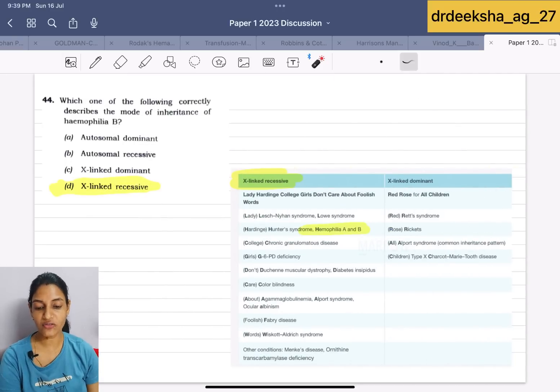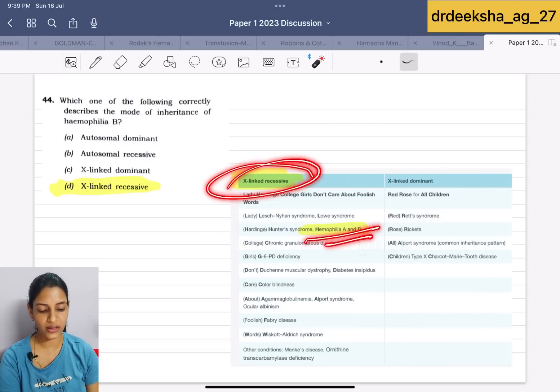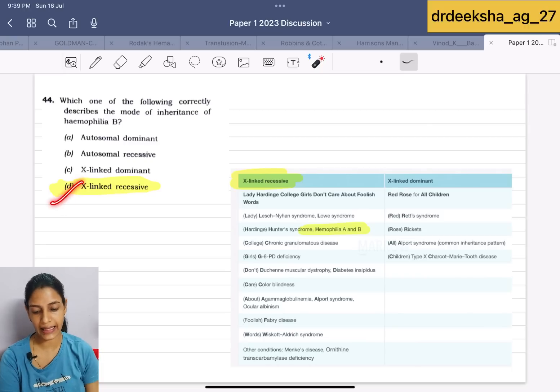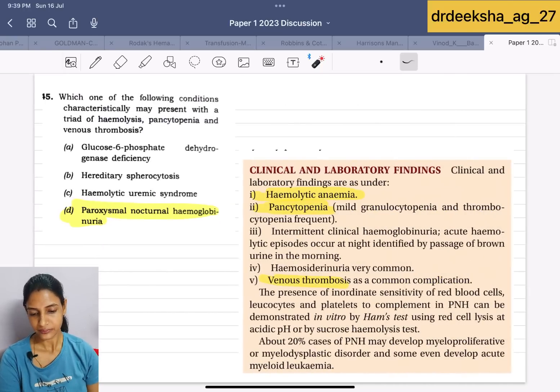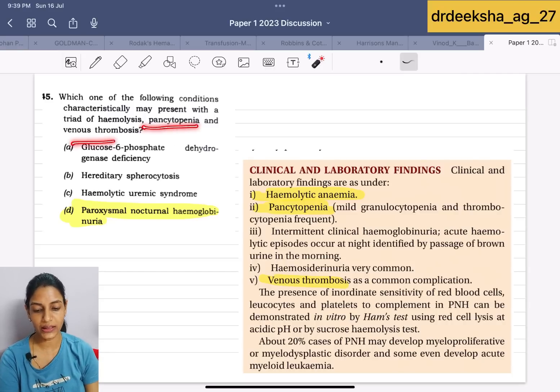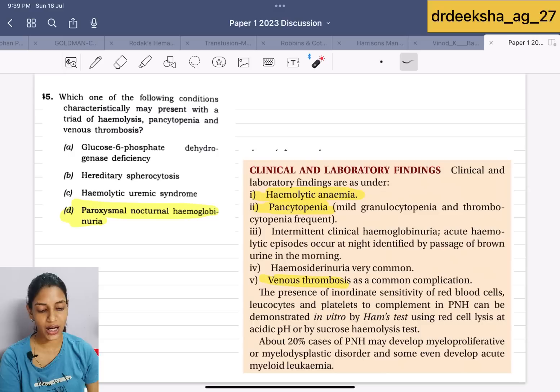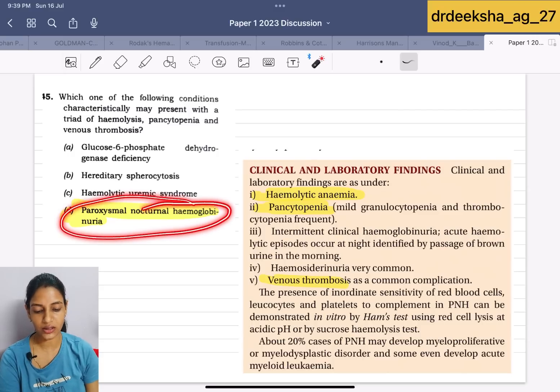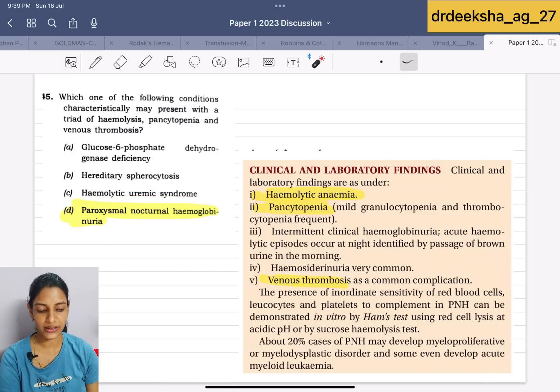Next they are saying is mode of inheritance of hemophilia B. X-linked recessive is the mode of inheritance both hemophilia A and B. Which of the following conditions characteristically may present with a triad of hemolysis, pancytopenia and venous thrombosis? The answer for this is paroxysmal nocturnal hemoglobinuria because it has all 3 hemolysis, pancytopenia and venous thrombosis.